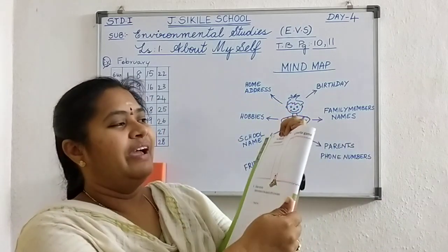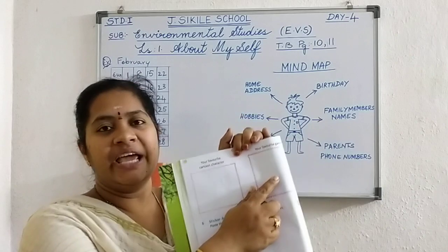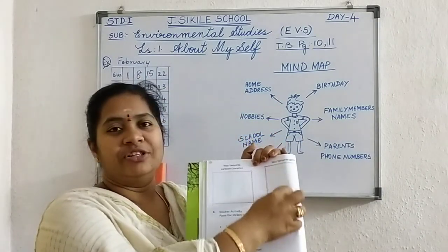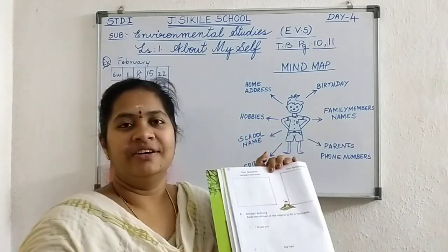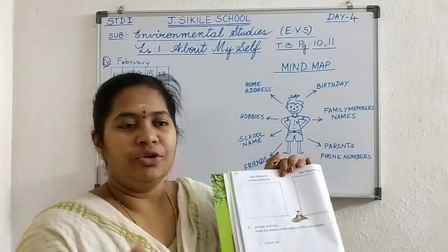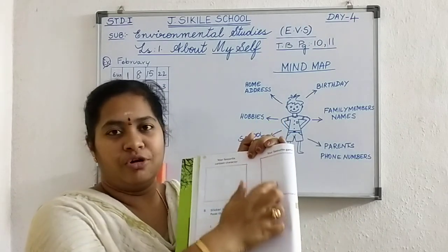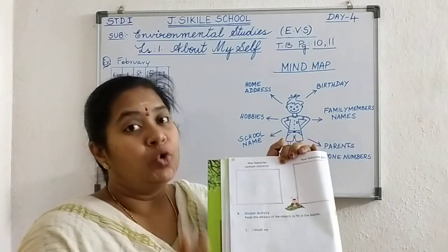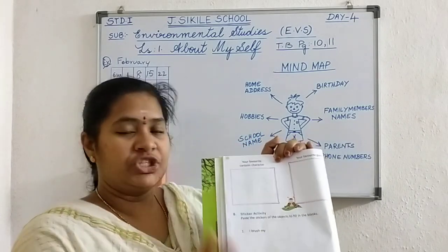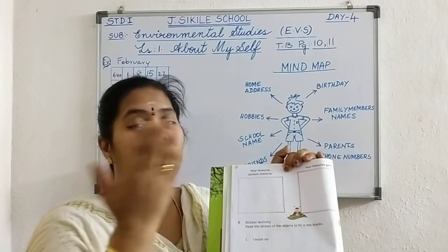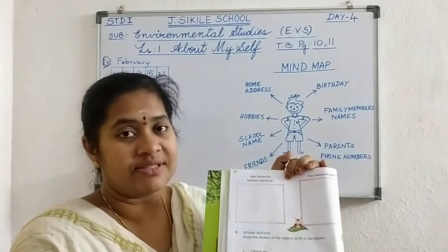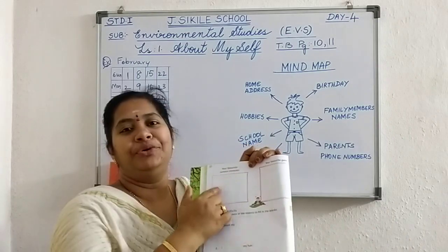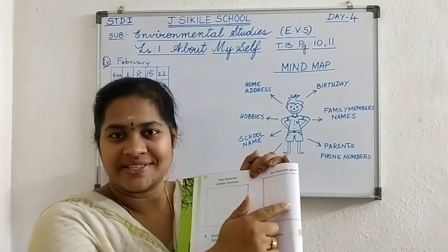And your favorite game — I like chess, so I'll draw chess here. Which game do you like? You like bat and ball, or you like a cricket game, or you like Ludo, or snakes and ladders? Which game you like? You draw. Take your parents' help and you can draw in these two boxes.